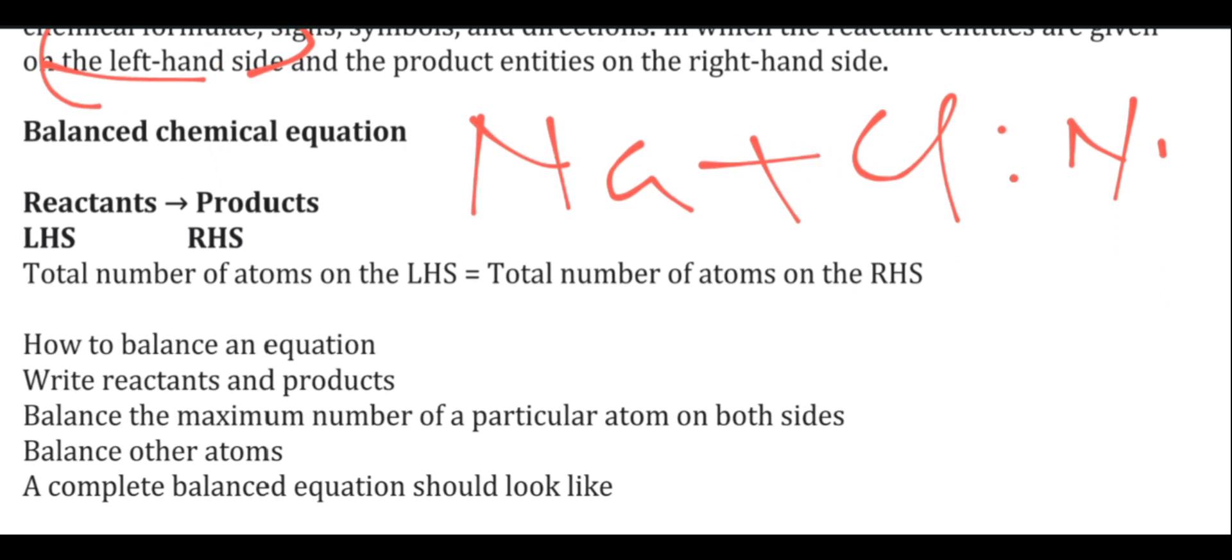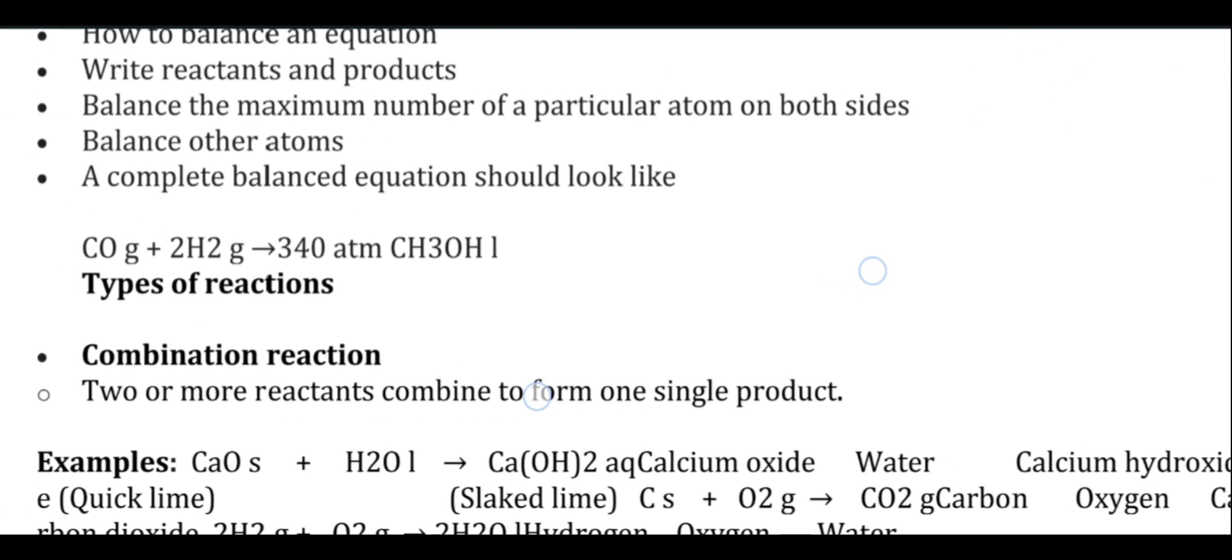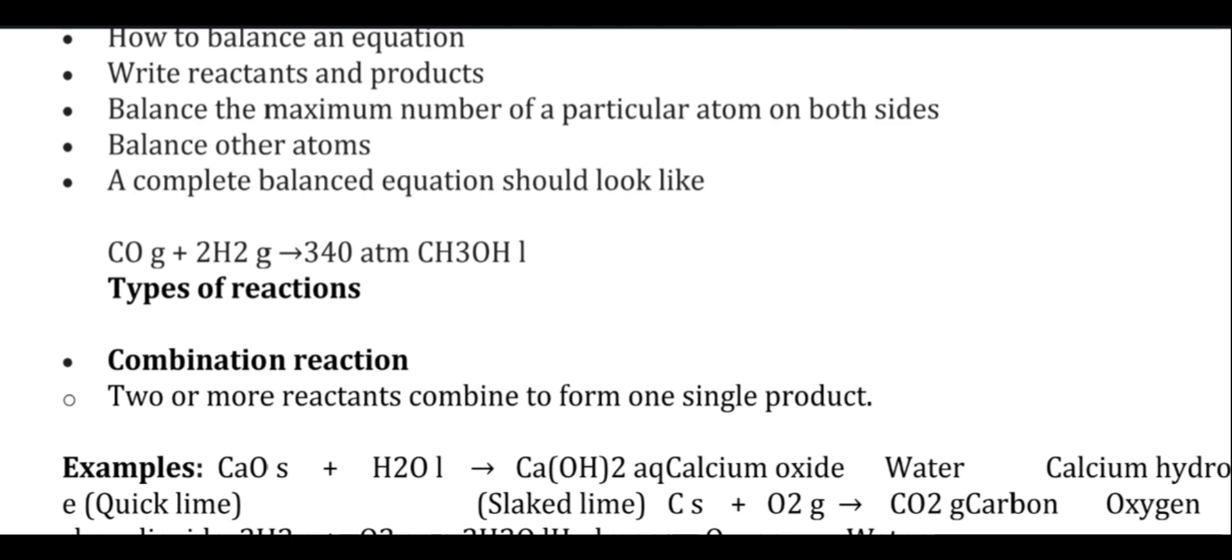How do we do the balancing of chemical equations? How do we do left-hand side and right-hand side? Using the law of conservation of mass, the total number of atoms on left-hand side equals the total number of atoms on the right-hand side. We compare the reactants and products. For example, carbon monoxide plus hydrogen reacts to form CH3OH.